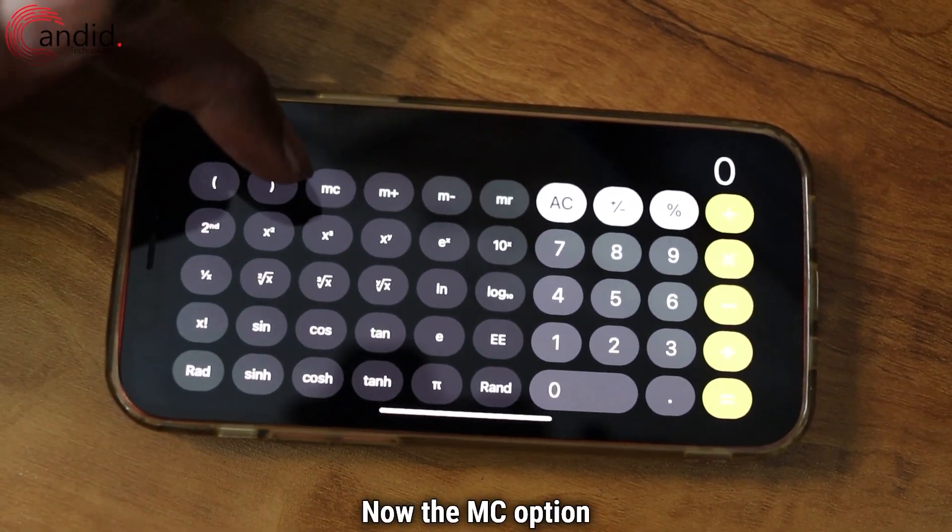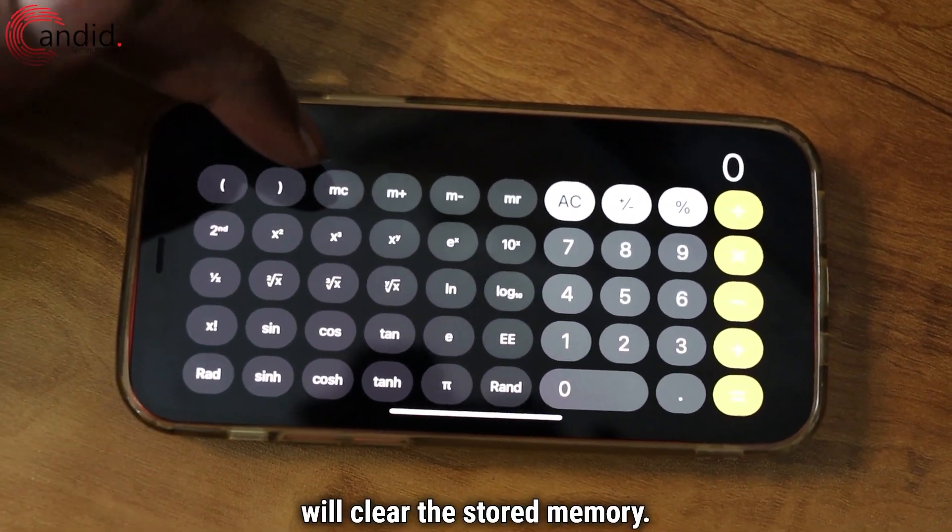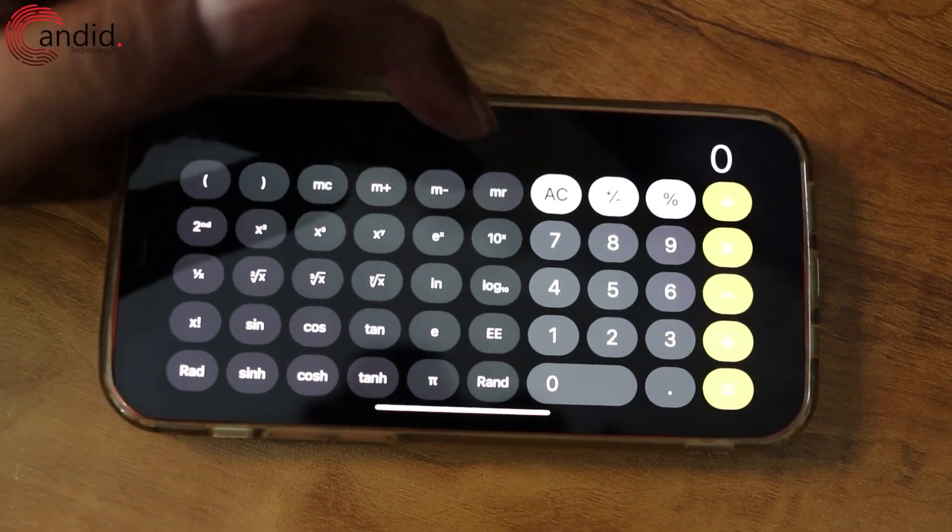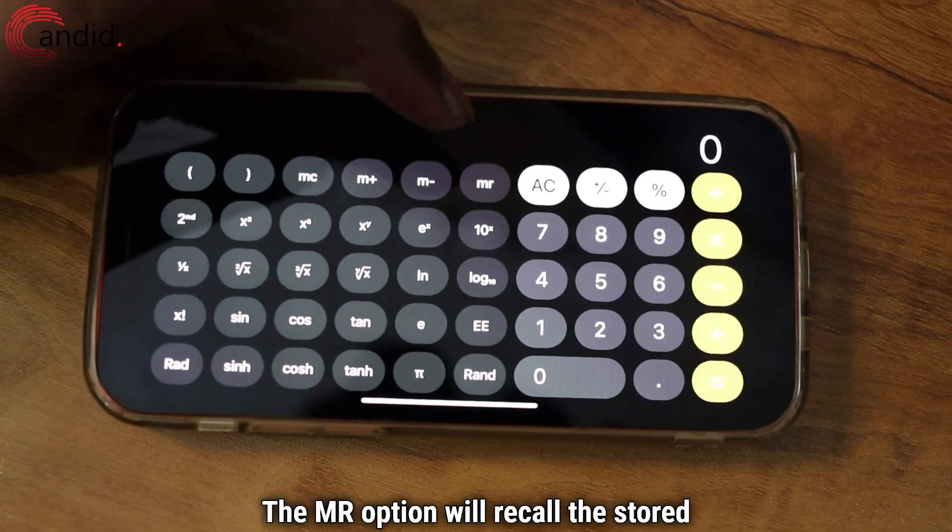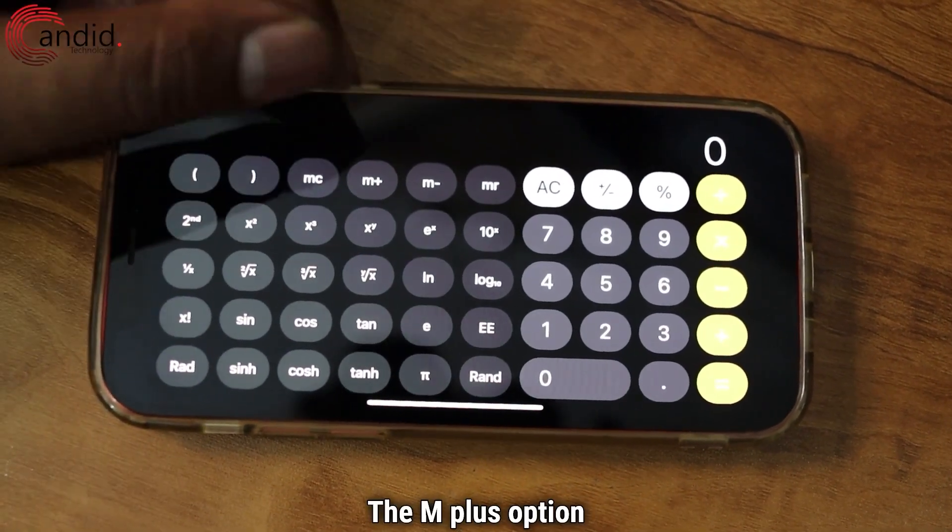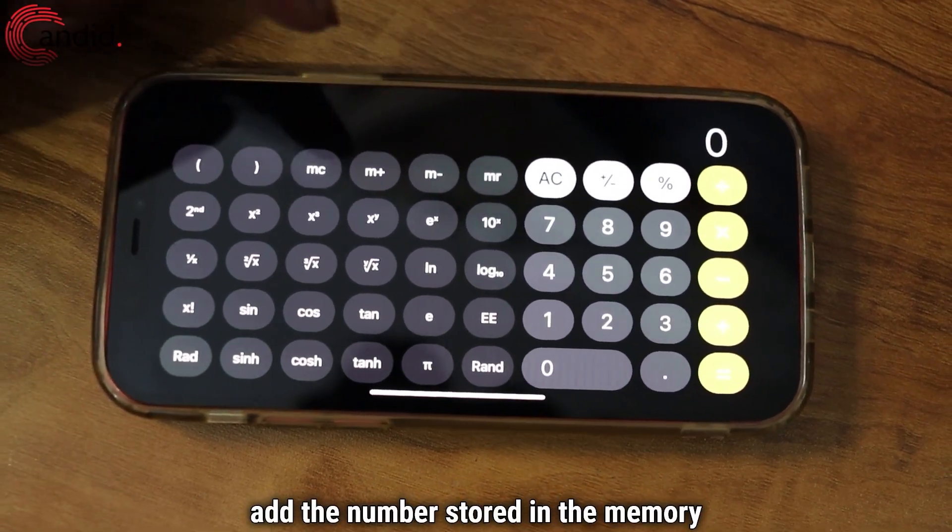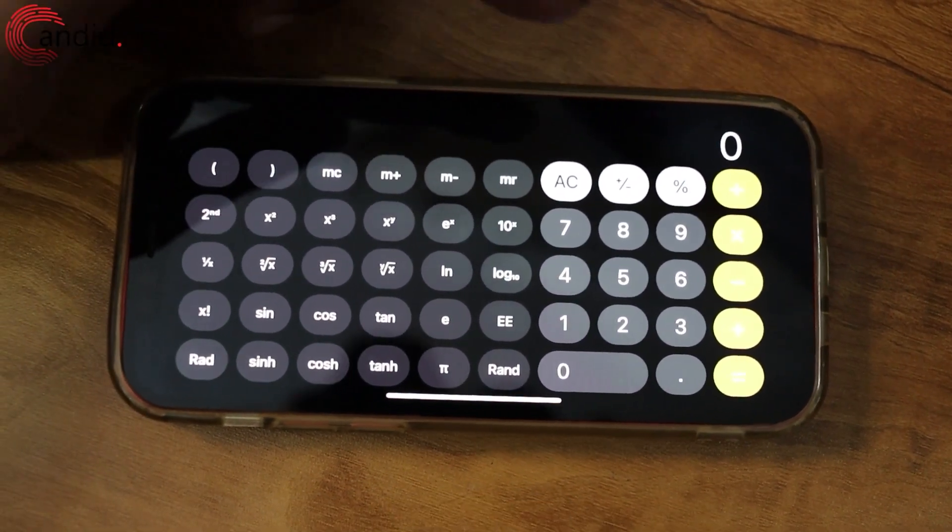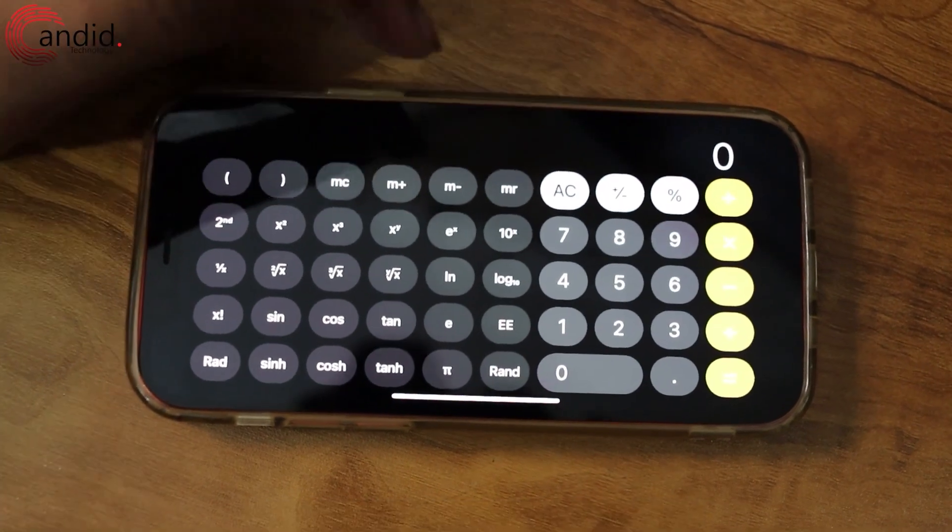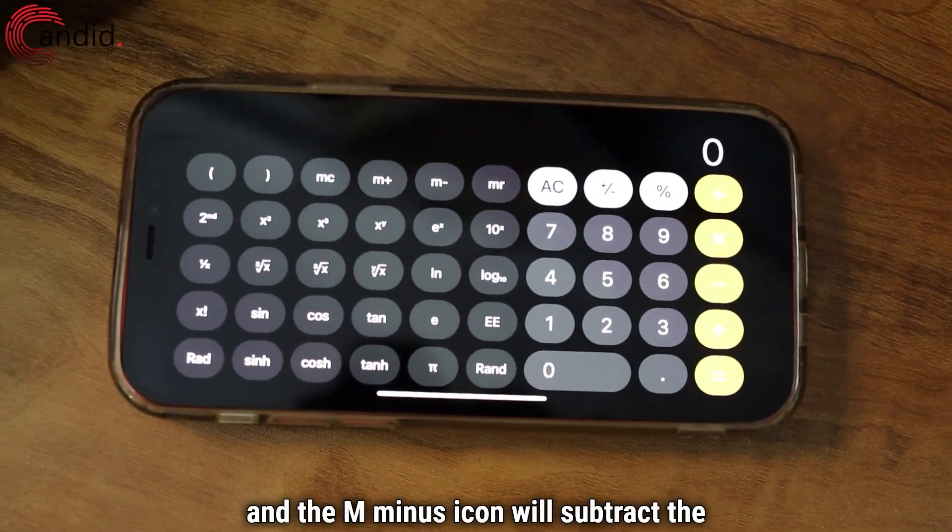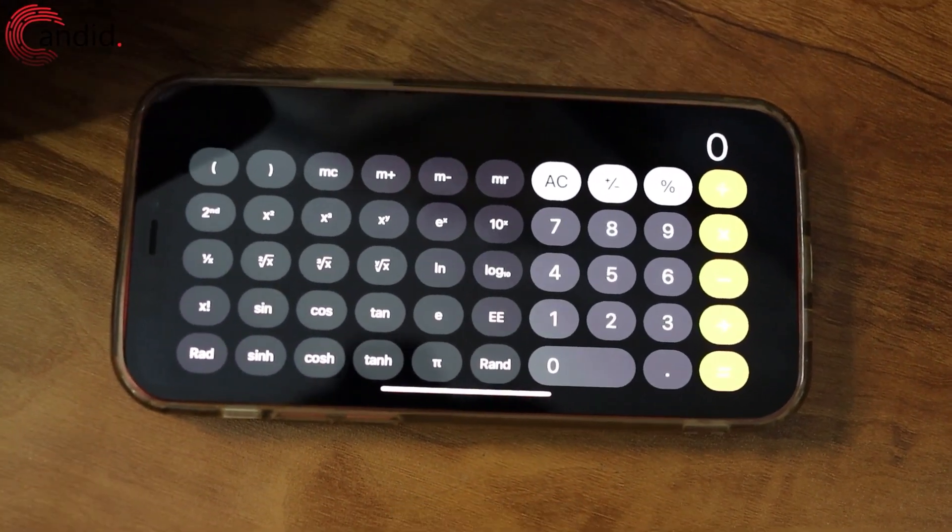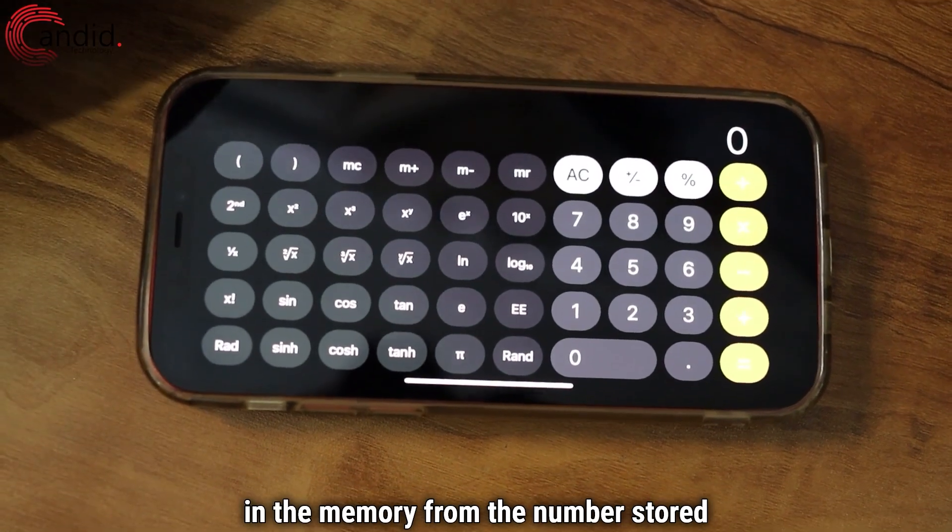Now the MC option will clear the stored memory. The MR option will recall the stored memory. The M plus option will add the number stored in the memory to the number that is being displayed on the screen and the M minus icon will subtract the number stored in the memory from the number stored on the screen.